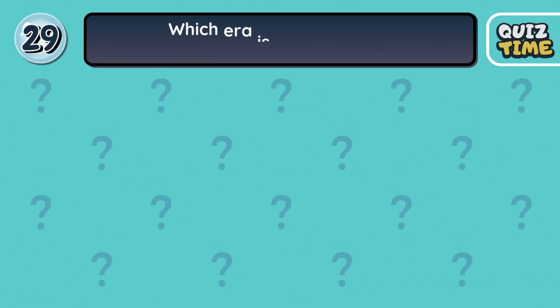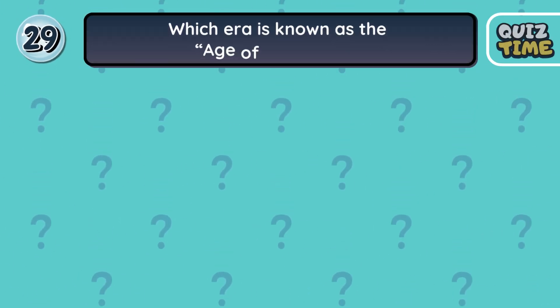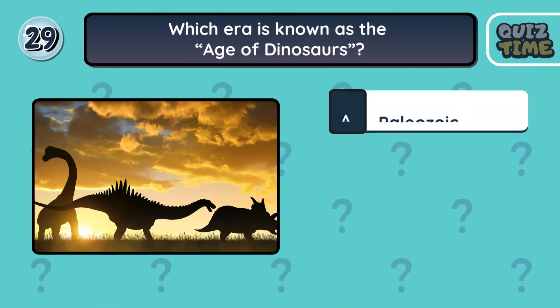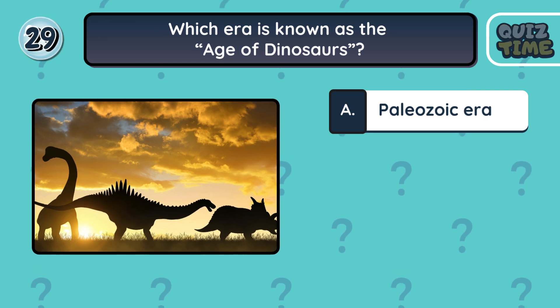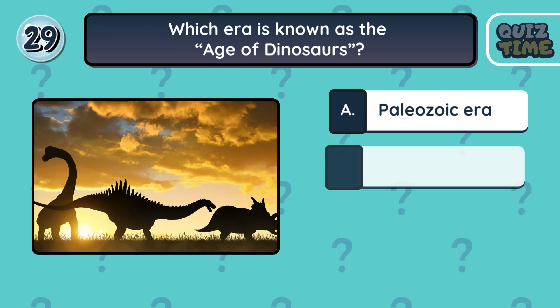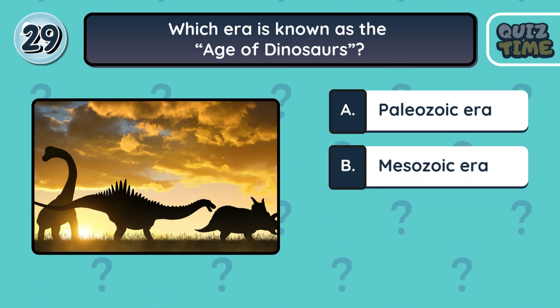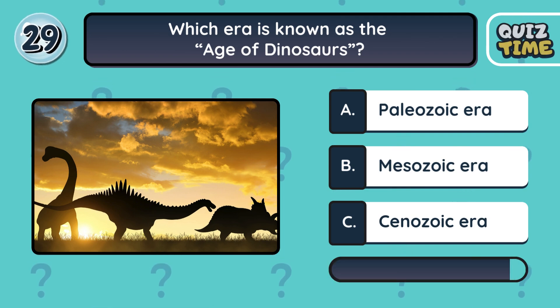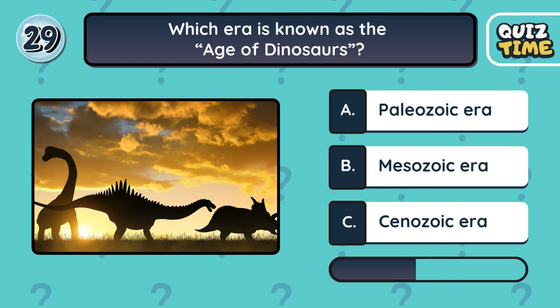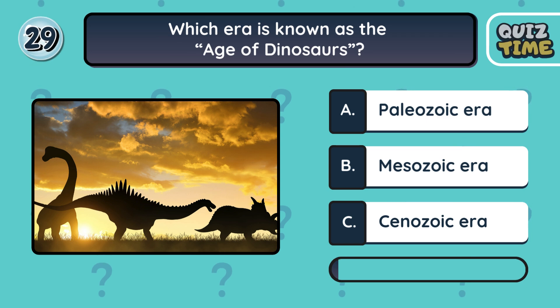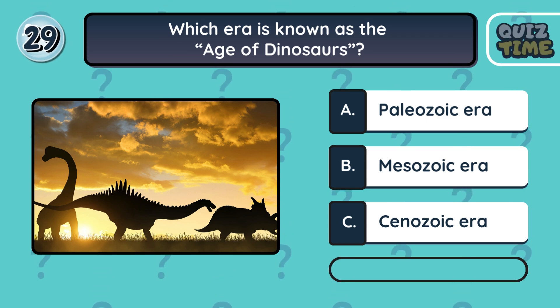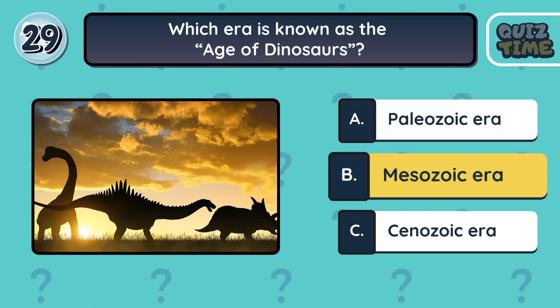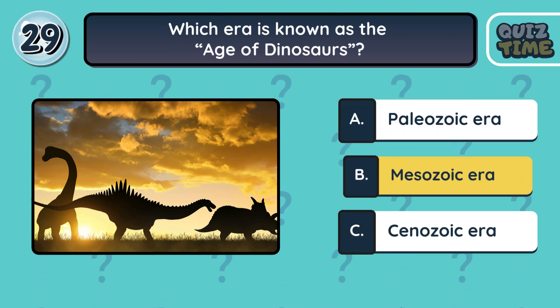Number 29. Which era is known as the age of dinosaurs? A. Paleozoic era. B. Mesozoic era. C. Cenozoic era. The correct answer is B. Mesozoic era.